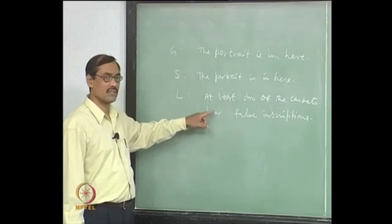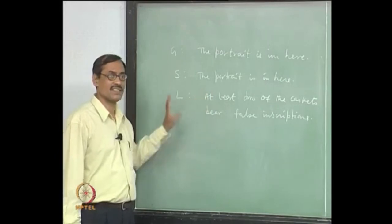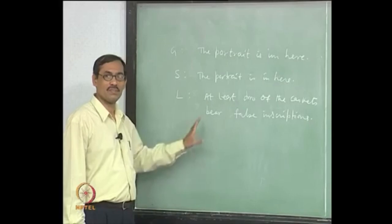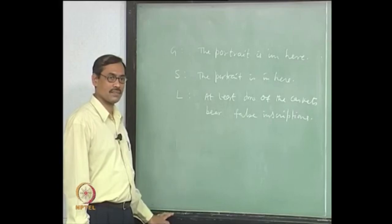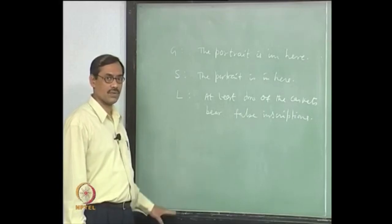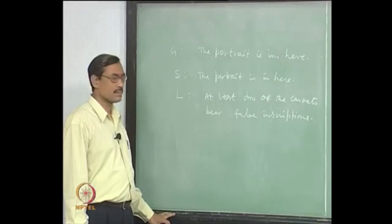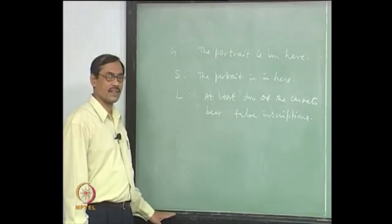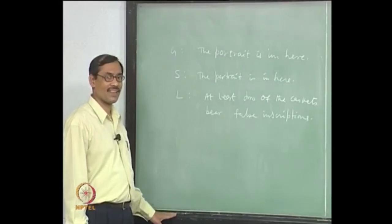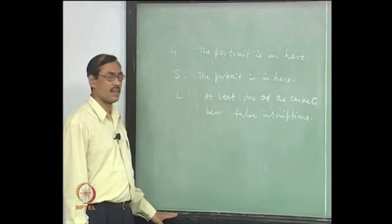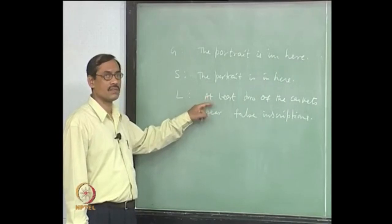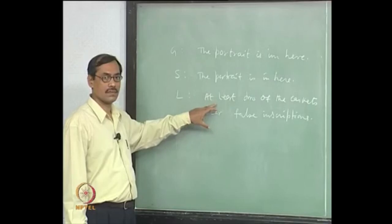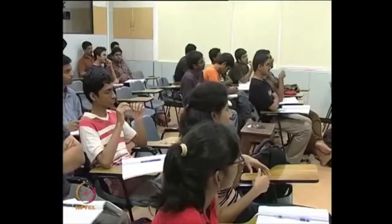At least two inscriptions are false. It is consistent. It is a possible solution. If you put inside the gold casket, what happens? G is true, S is false. What about L? Is it true or false? If it is true, then at least two of them should have been false, but two of them are becoming true. Therefore, it tends to be false.